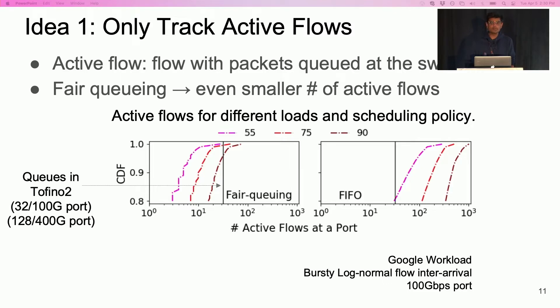The intuition behind this phenomenon is that a fair queuing switch tends to process short flows quickly, completing them and keeping the number of active flows small. In contrast, with FIFO scheduling, a single congested long flow can cause a large number of short flows to back up behind it, increasing the number of active flows. Interestingly, this observation about the number of active flows holds regardless of the flow size distribution and link speeds.